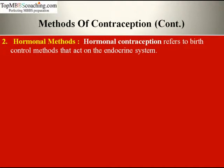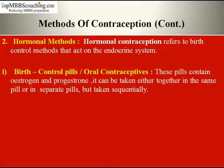Next is hormonal methods. Hormonal contraception refers to birth control methods that act on the endocrine system. Hormone-containing contraceptives are usually employed by women for suppressing ovulation. In birth control pills, these hormones shut down production of the pituitary hormones — follicle stimulating hormone (FSH) and luteinizing hormone (LH). The artificial maintenance of high levels of estrogen and progesterone fools the body into acting as if ovulation has already occurred.